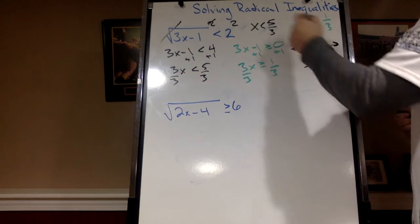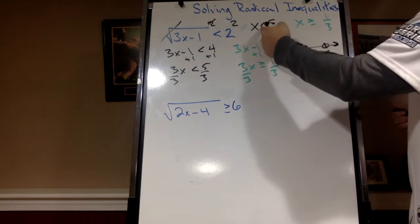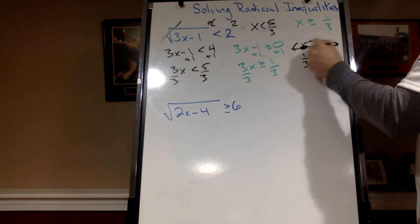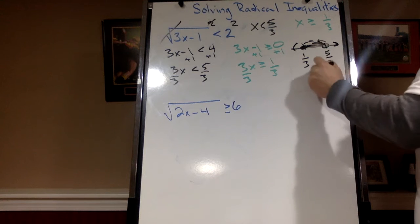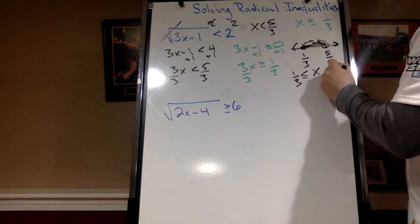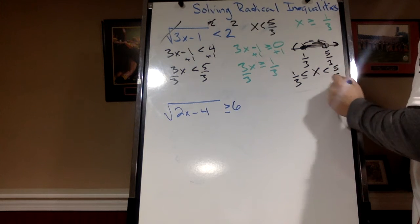5 thirds is the largest. Now, less than 5 thirds, greater than or equal to 1 third. That's right in between. So that's a conjunction. Greater than or equal to 1 third and less than or equal to 5 thirds.